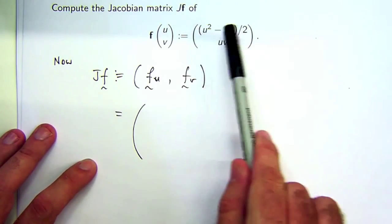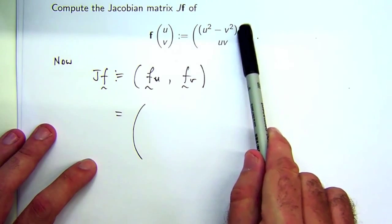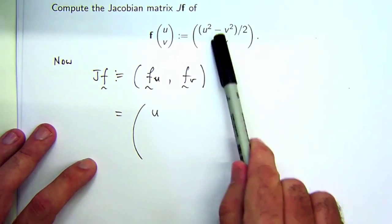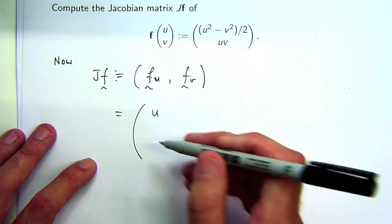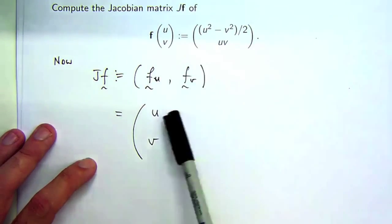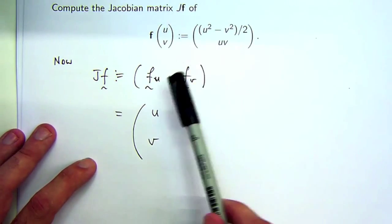I go up to here, differentiate with respect to u. I'll get 2u, and that'll cancel with the half, so I'll get u. If I go down here, differentiate with respect to u, I'll get v. I can get rid of the comma now.